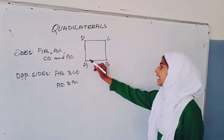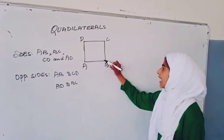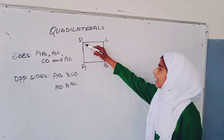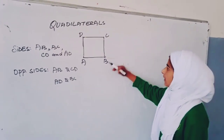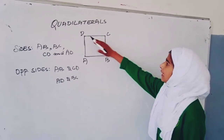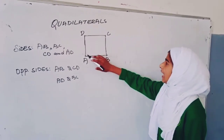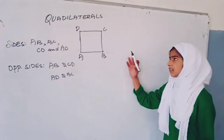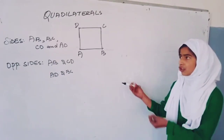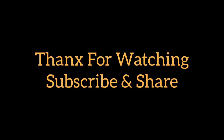The opposite angles are B and D, and A and C. This is a short explanation.